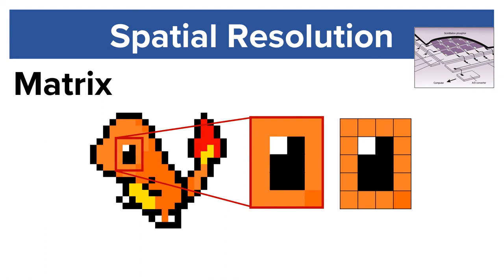A matrix is the layout of pixels in rows and columns and the total number of pixels in the image. For example, Charmander's eye has a matrix of 4 pixels across and 5 pixels high, for a total matrix size of 20.